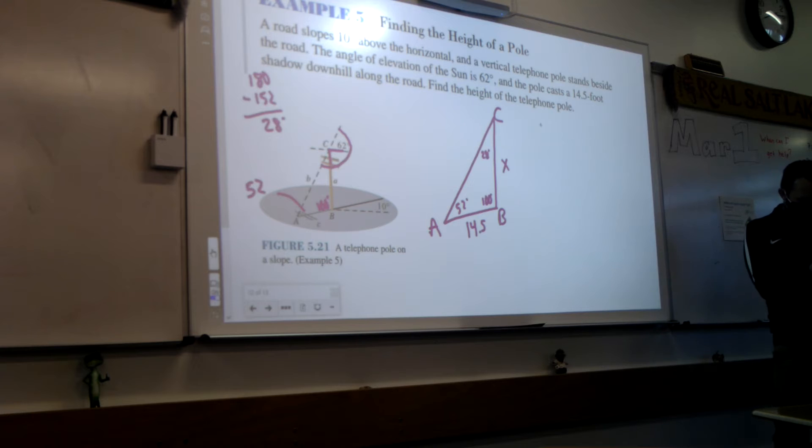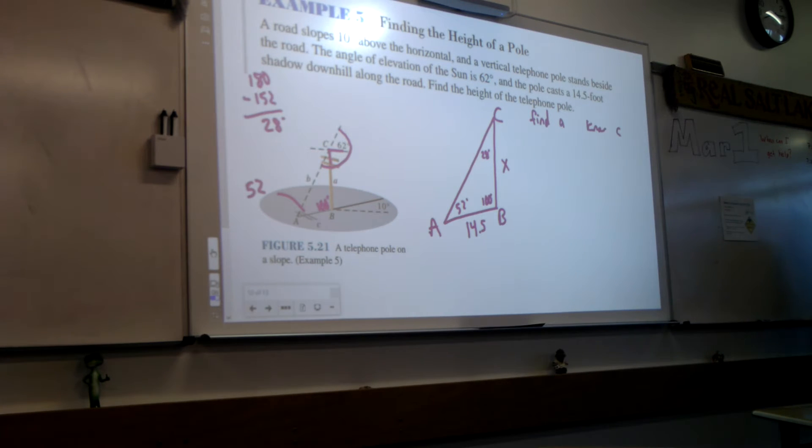So I'm going to set this up. We know C. Or actually, we do what we find first. Sorry, let me do that first. We're trying to find which letter? A. And we know C. So, are we finding sides or angles? So what goes on top? So I'm going to do A over sine of A equals C over sine of C.